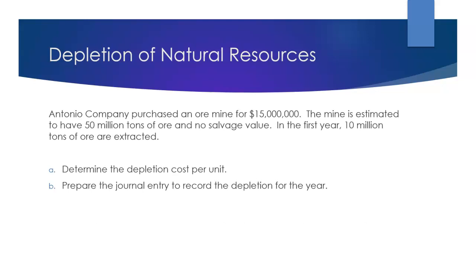Let's talk about this example problem. Antonio Company purchased an ore mine for $15 million. The mine is estimated to have 50 million tons of ore and no salvage value. In the first year, 10 million tons of ore are extracted. We need to first determine the depletion cost per unit, and then prepare the journal entry to record the depletion for the year.